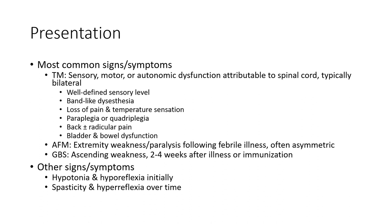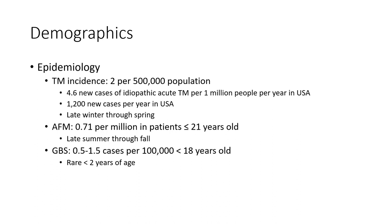Other signs and symptoms include hypotonia or hyporeflexia, initially followed by spasticity and hyperreflexia. Demographically, transverse myelitis has an incidence of 2 per 500,000 population, with 4.6 idiopathic acute cases per 1 million people per year in the USA, and 1,200 new cases per year in the USA, occurring late winter through spring. AFM occurs at 0.71 per million in patients aged 21 years or younger, late summer through fall. GBS occurs at 0.5 to 1.5 cases per 100,000 in those under 18 years old, and is rare under 2 years of age.